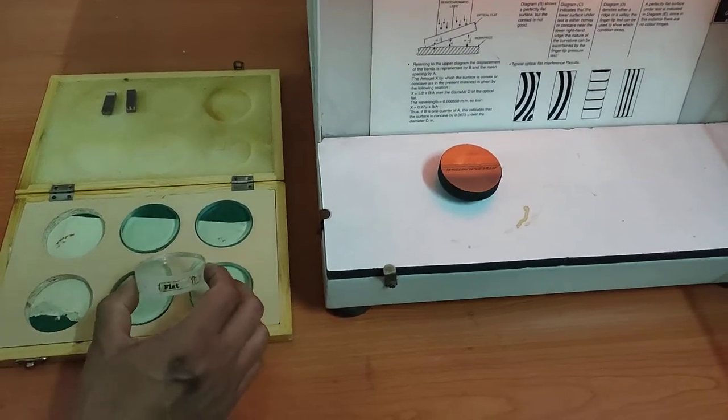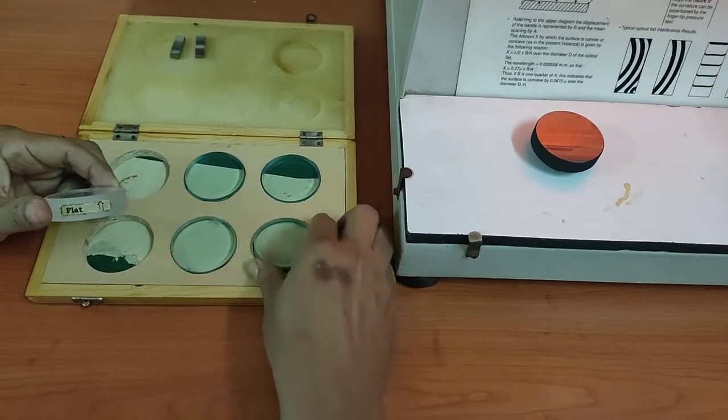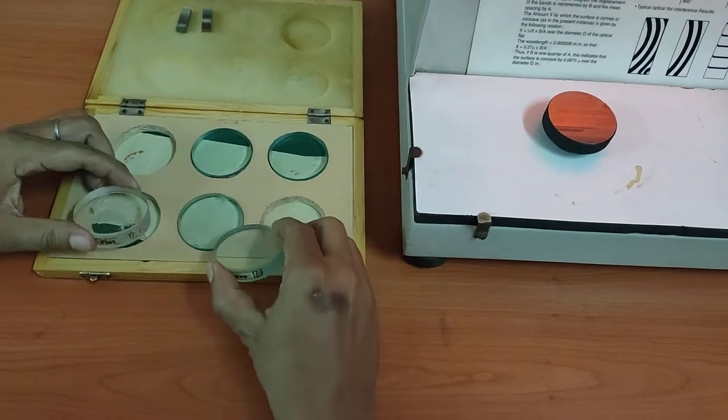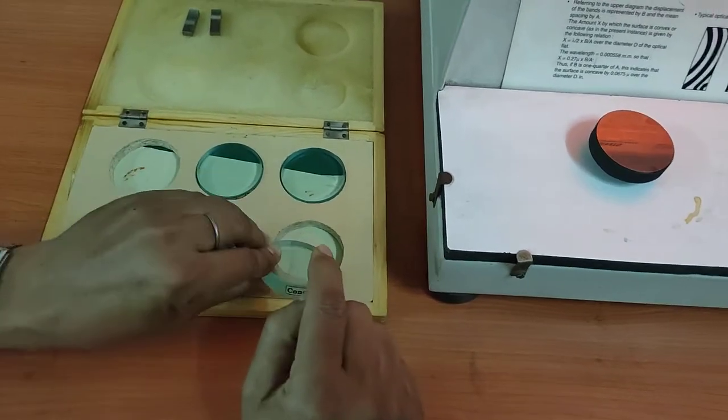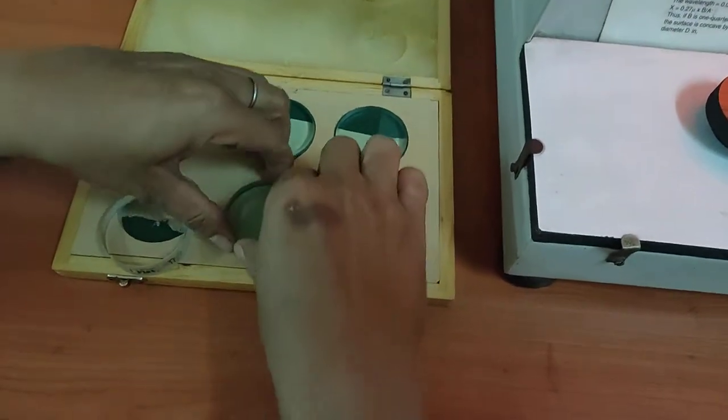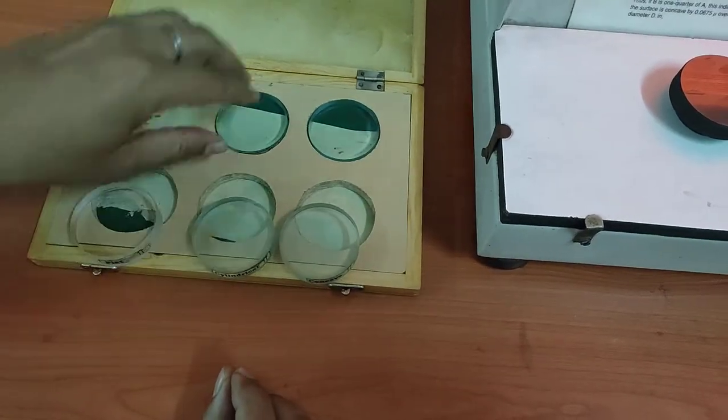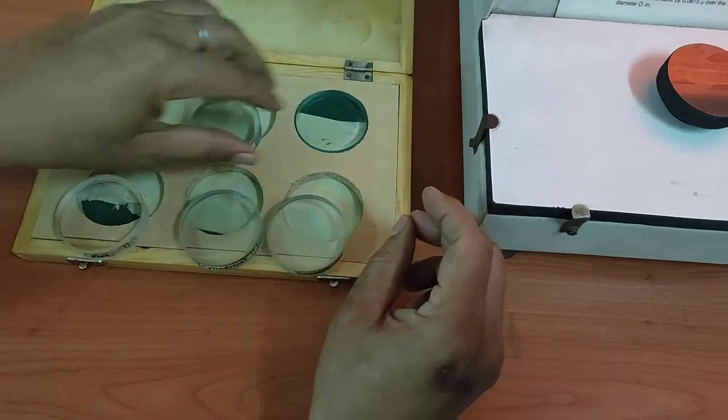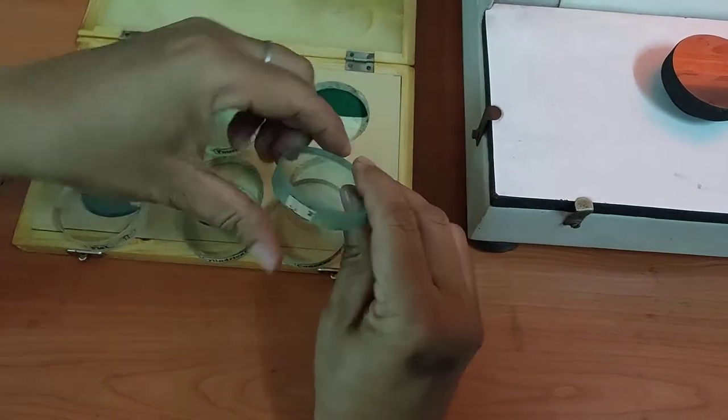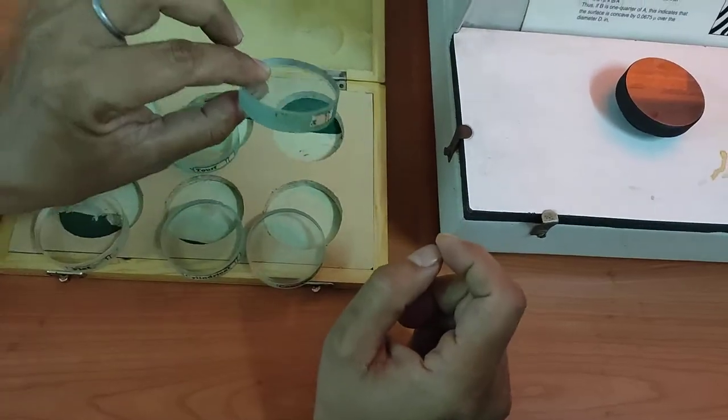There are different sets of optical glasses. This is a flat optical glass, this one is concave optical glass, this is cylindrical one, then trough, and the last one is convex.